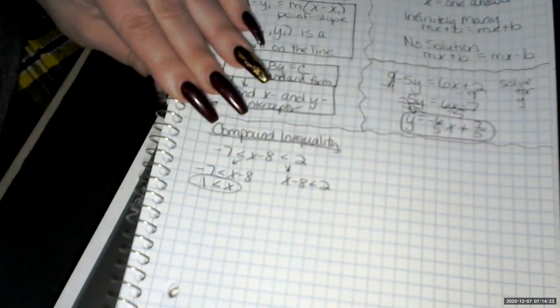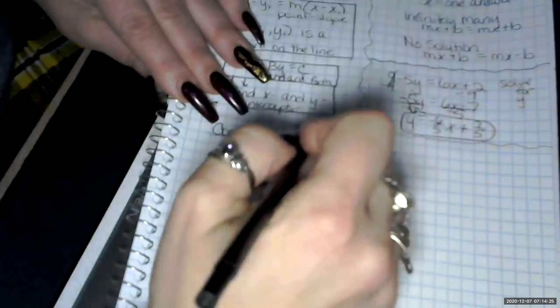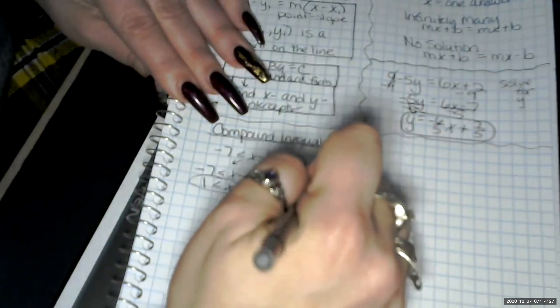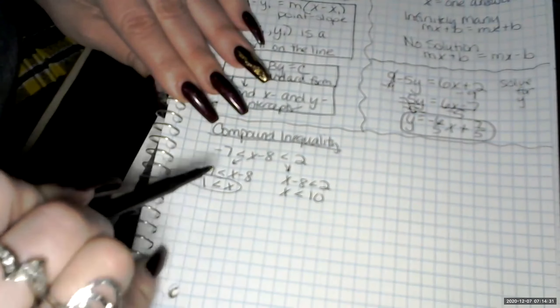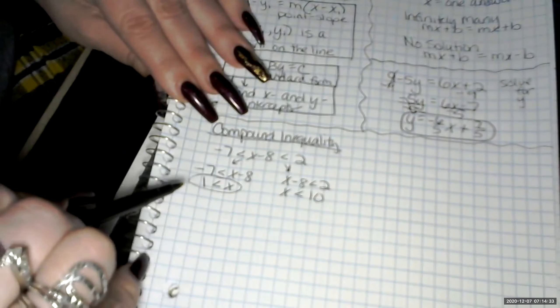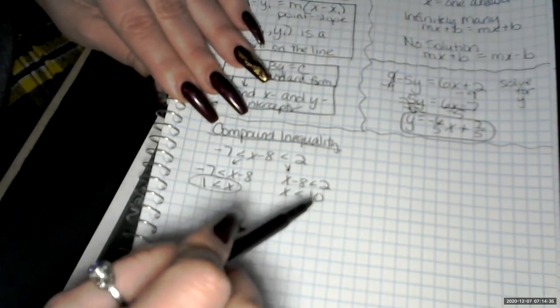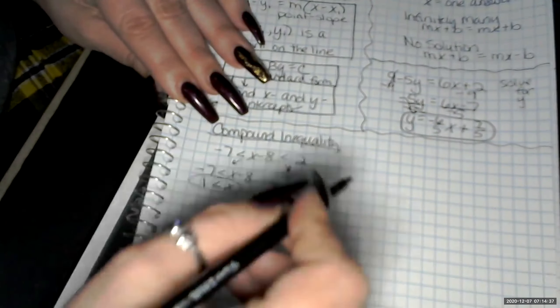And then over here, we add 8 to both sides. And we get x is less than 10. Remember, we don't need to flip the sign unless we're multiplying or dividing by a negative when we solve. And in here, we were just adding so we didn't need to switch.